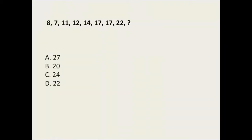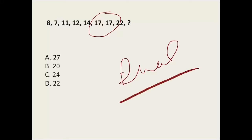The next question is the series: 8, 7, 11, 12, 14, 17, 17, 18. When you see two numbers alternating in a series, most probably it is a dual series — basically two series interleaved. You can see 8, 11, 14, 17 with a common difference of plus 3, so the next number in that series is 20. The right answer is 20.